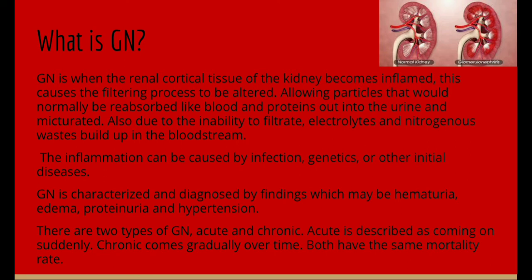There are two types of GN: acute and chronic. Acute is described as coming on suddenly, while chronic comes gradually over time. Both have the same mortality rate.